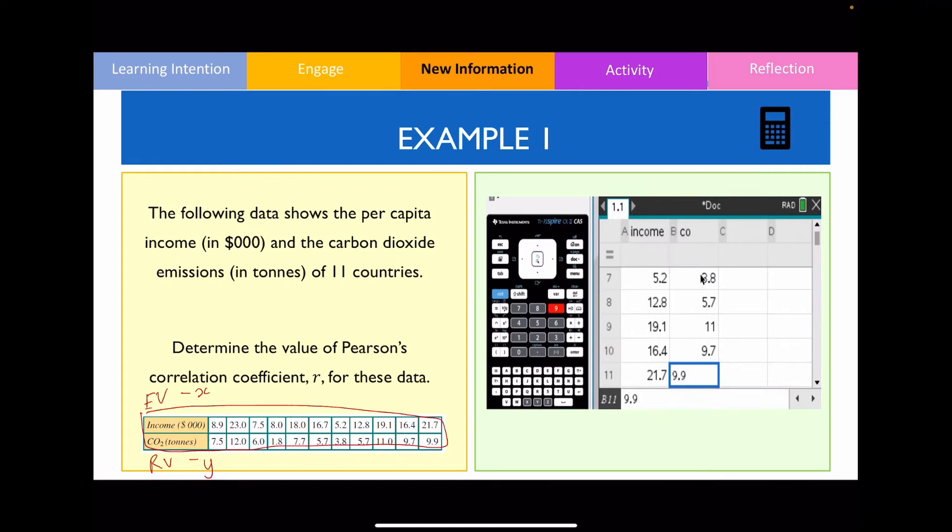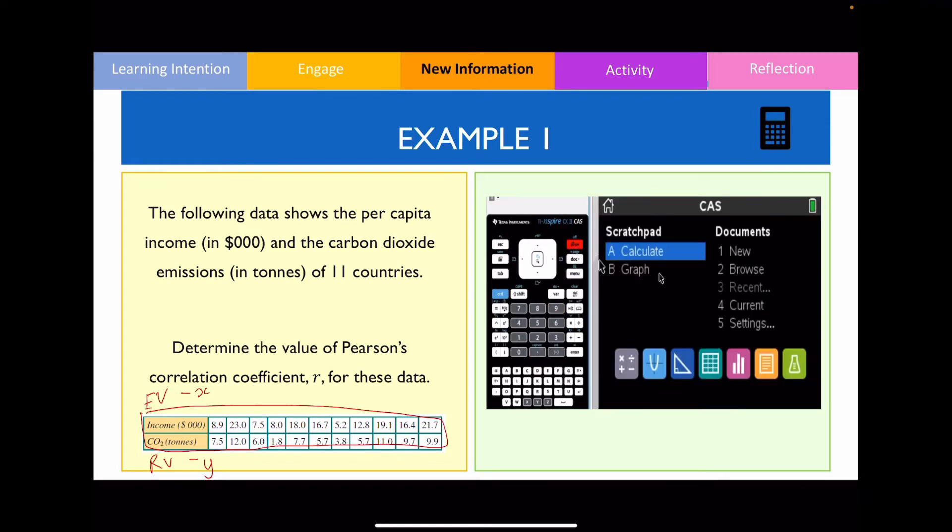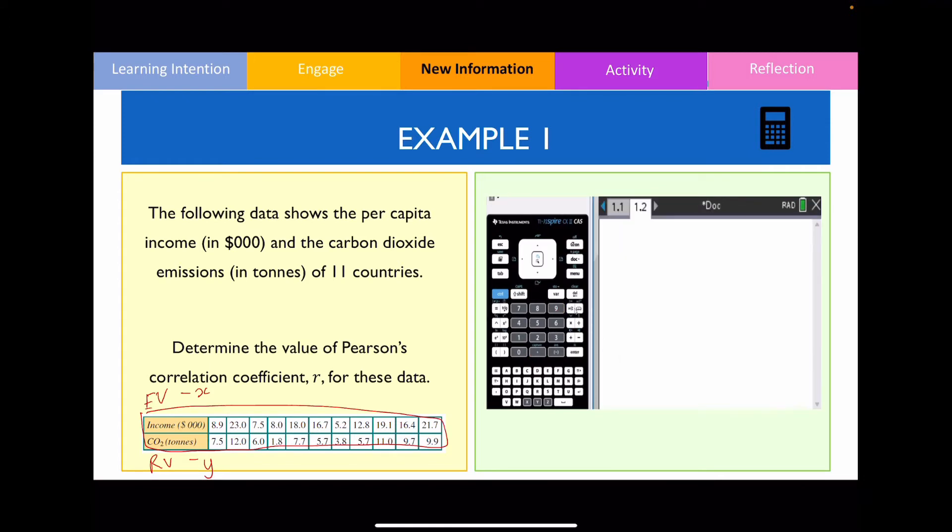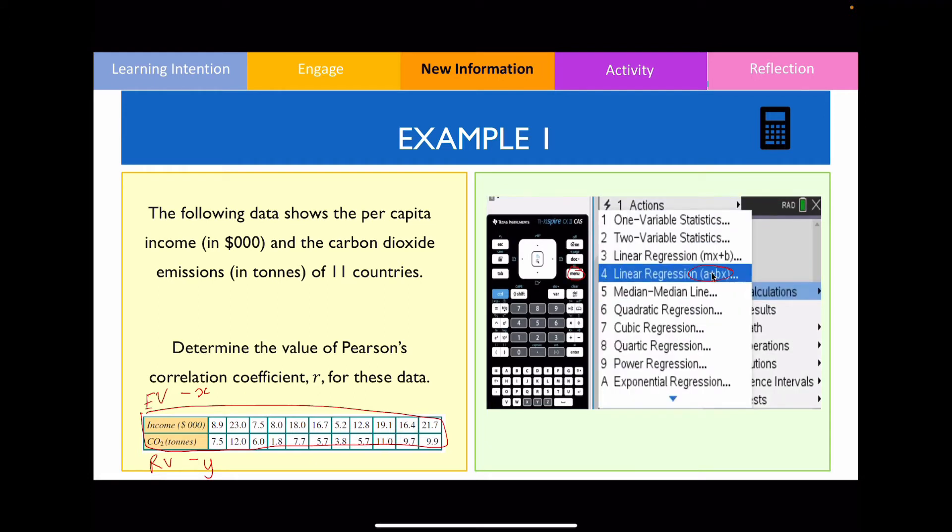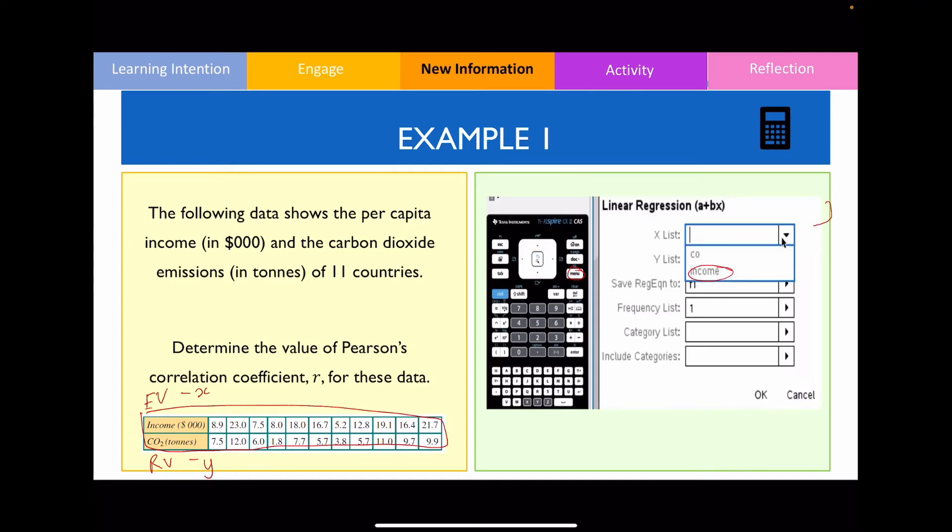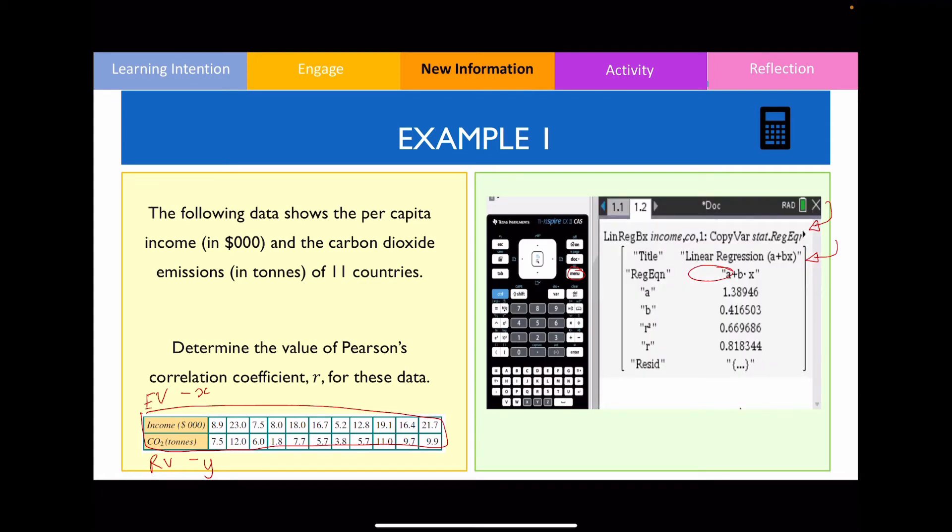Now what I'm going to do is I'm going to go back onto the main screen, then calculator, then I'm going to click on menu, statistics, stat calculations and I'm going to enter the fourth option. Make sure the explanatory variable goes where x is and the response variable goes to your y-axis, and what this will produce is all the values that are needed for your equation for the line of best fit as well as Pearson's correlation coefficient.